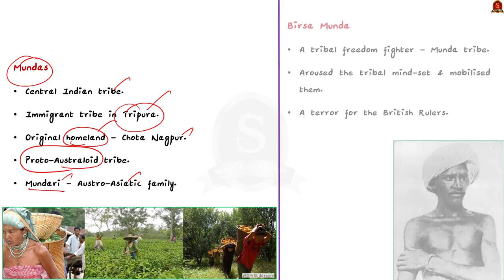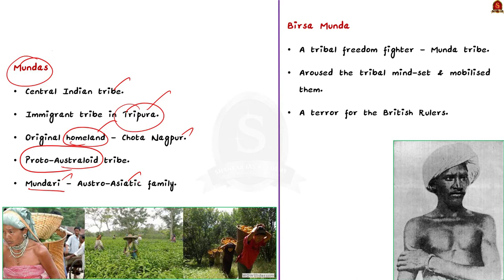Birsa Munda is a tribal freedom fighter belonging to the Munda tribe. He aroused the tribal mindset and mobilized them in the little town of Chhotanagpur, revolting against the British. He was a terror for the British rulers. Now let's know the causes of the Munda Rebellion and how it all started.